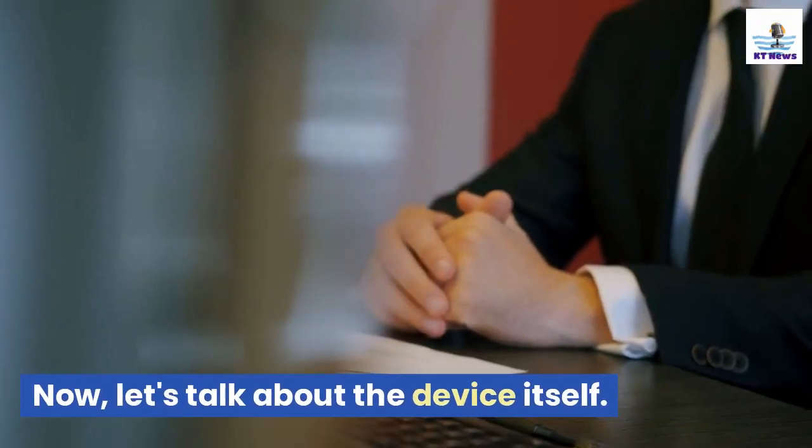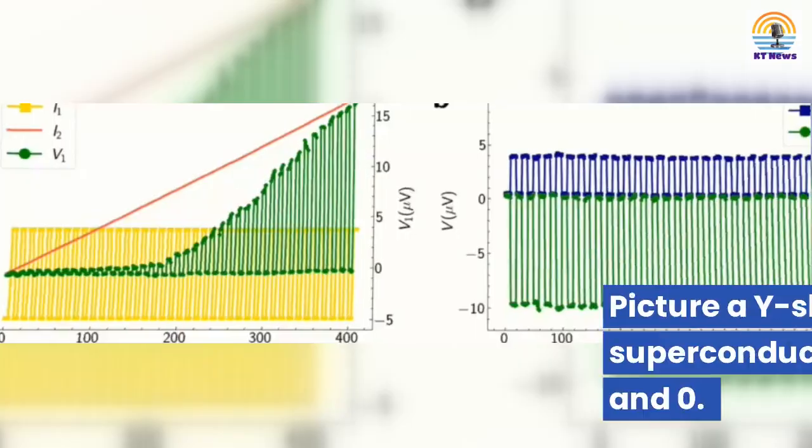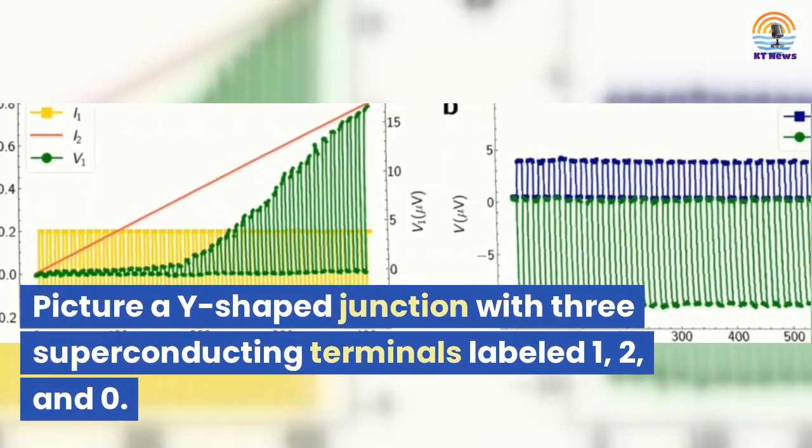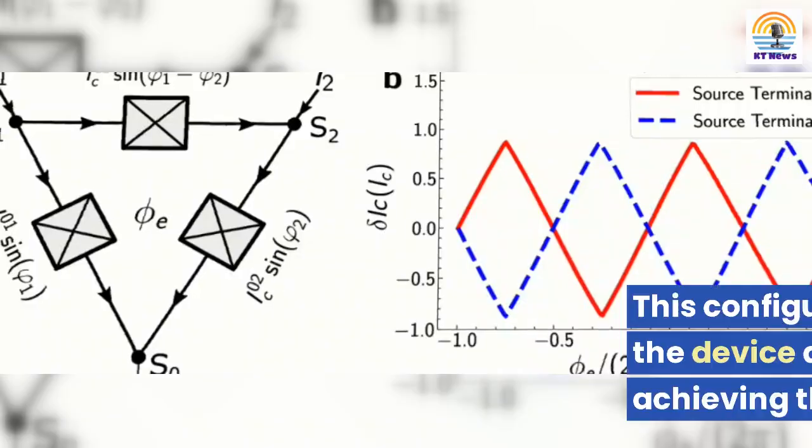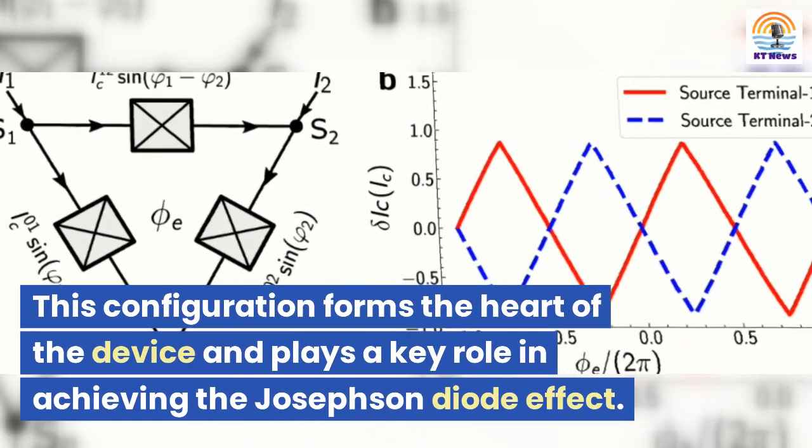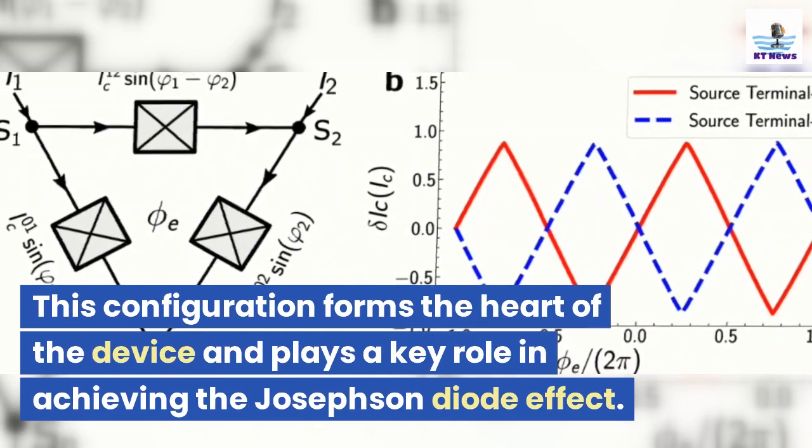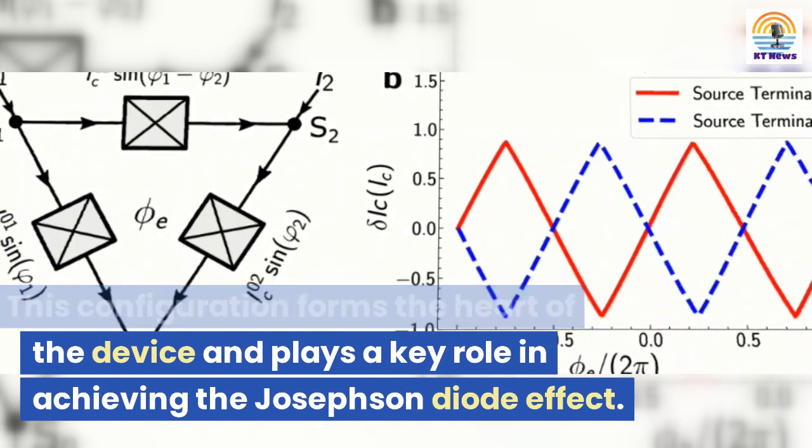Now, let's talk about the device itself. Picture a Y-shaped junction with three superconducting terminals labeled 1, 2, and 0. This configuration forms the heart of the device and plays a key role in achieving the Josephson diode effect.